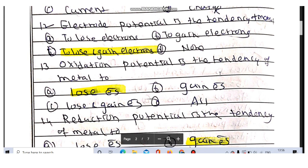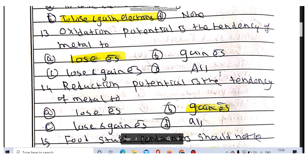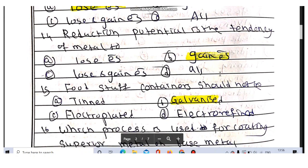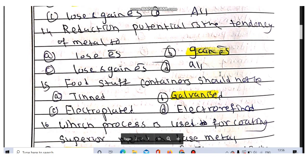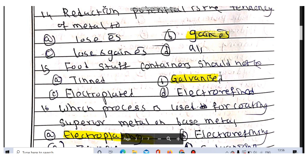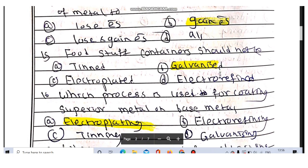In question number 13, oxidation potential is the tendency to lose electrons. Reduction potential is the tendency of metal to gain electrons. Foodstuff containers should not be galvanized because it causes poisonous products with food.